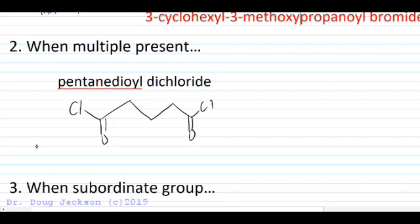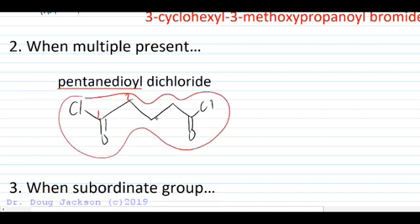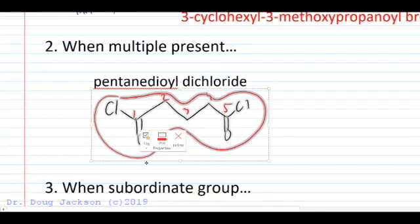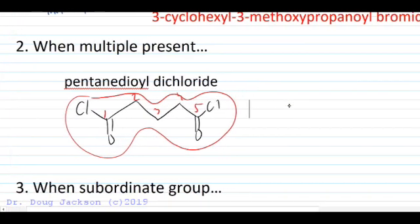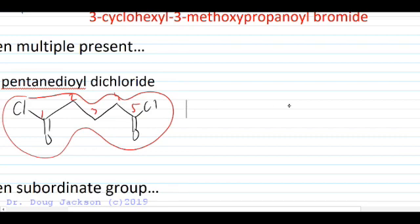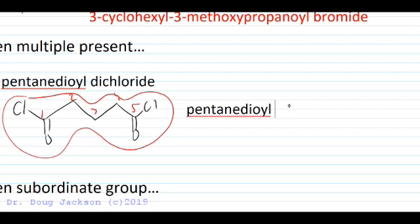If there's more than one acid halide present, and we have only the parent chain here with no groups off of that parent chain, we can just number from either side: one, two, three, four, and five. If we were naming this as a carboxylic acid, it would be a pentanedioic acid. We could name this as pentanedioyl, with an 'e' to separate consonants, dichloride because there's two chlorines on either side.